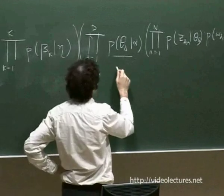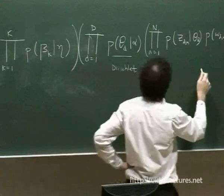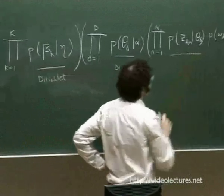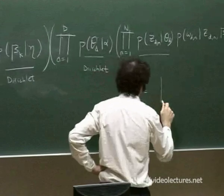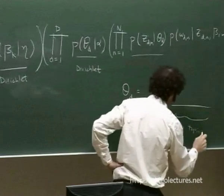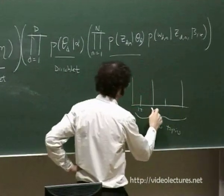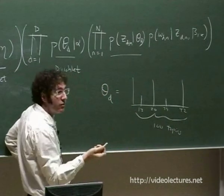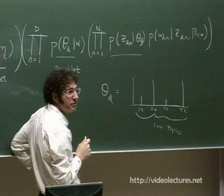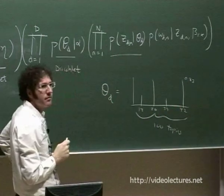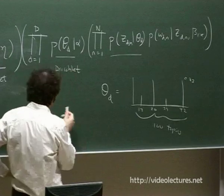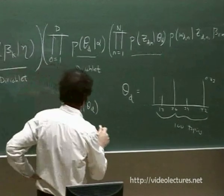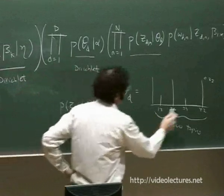Two important conditional distributions: p(Z_dn | theta_d) equals theta_{d, Z_dn} — Z_dn indexes into theta_d, so if theta_d has probabilities over 100 topics and Z_dn equals 42, then p(Z_dn | theta_d) equals 0.33 in our example. And p(W_dn | Z_dn, beta_1 through K) equals beta_{Z_dn, W_dn} — the W_dn entry in topic beta_{Z_dn}. With these two facts and the joint distribution, we've fully specified the model, subject to telling you about the Dirichlet distribution.